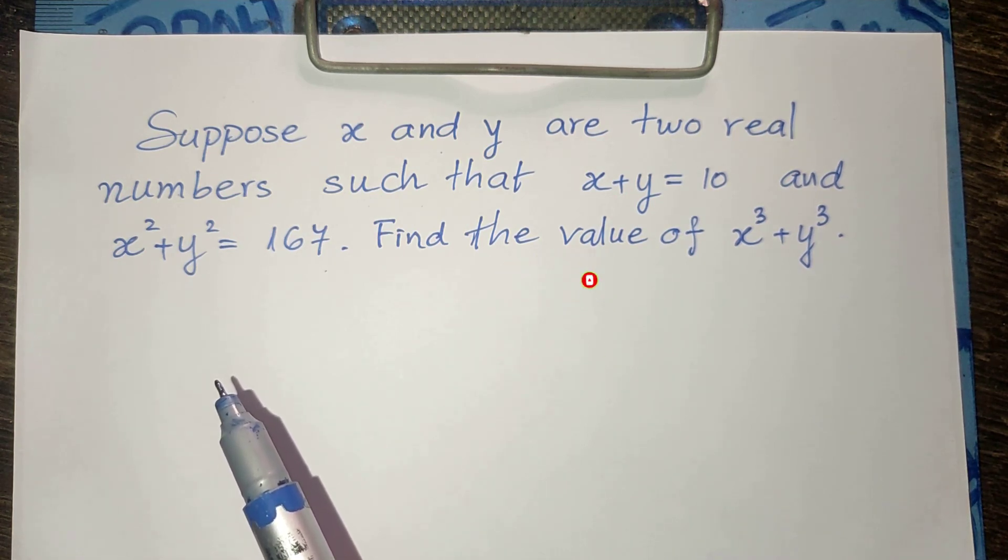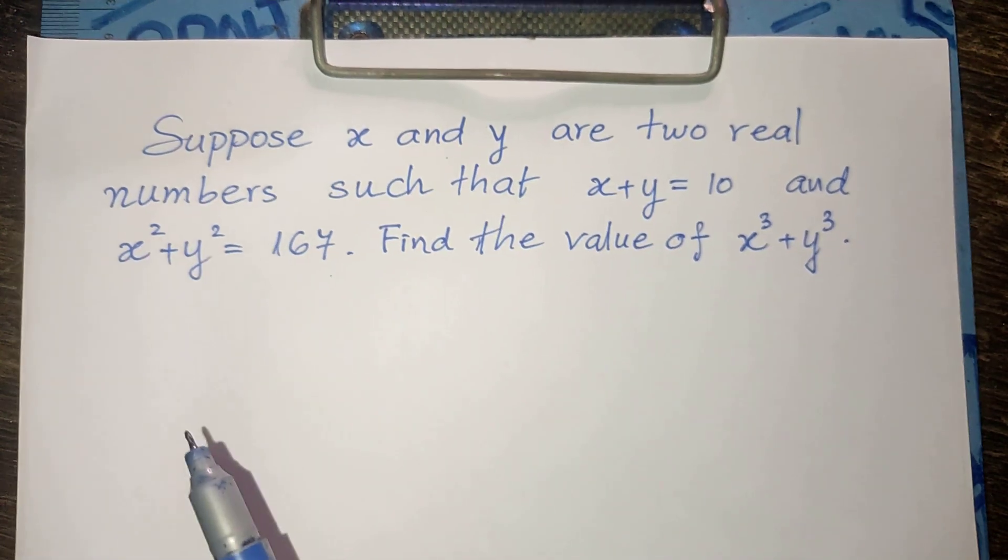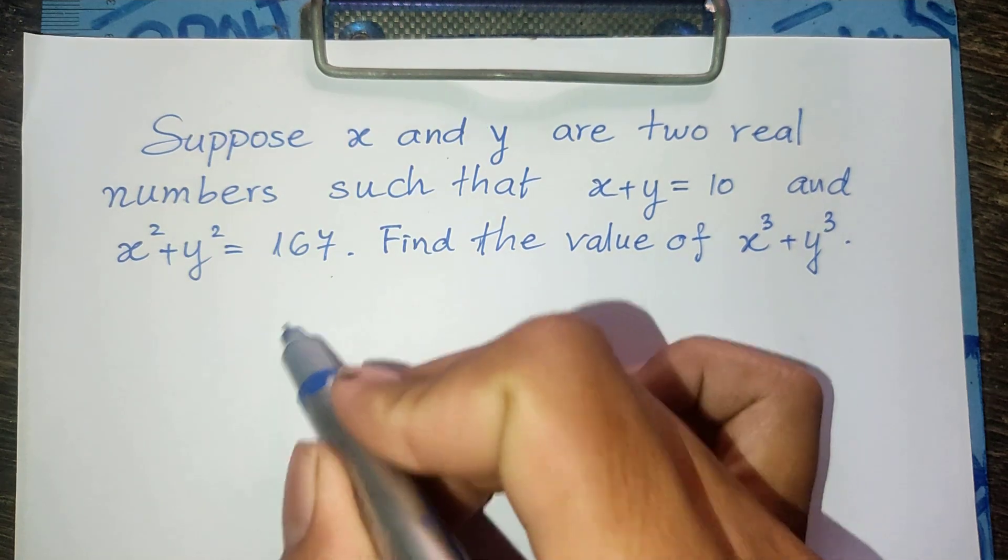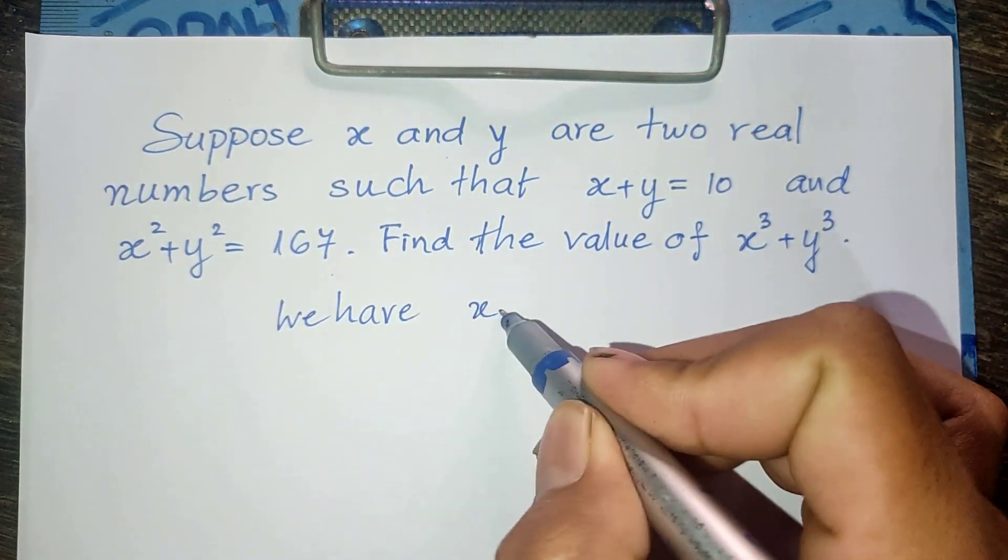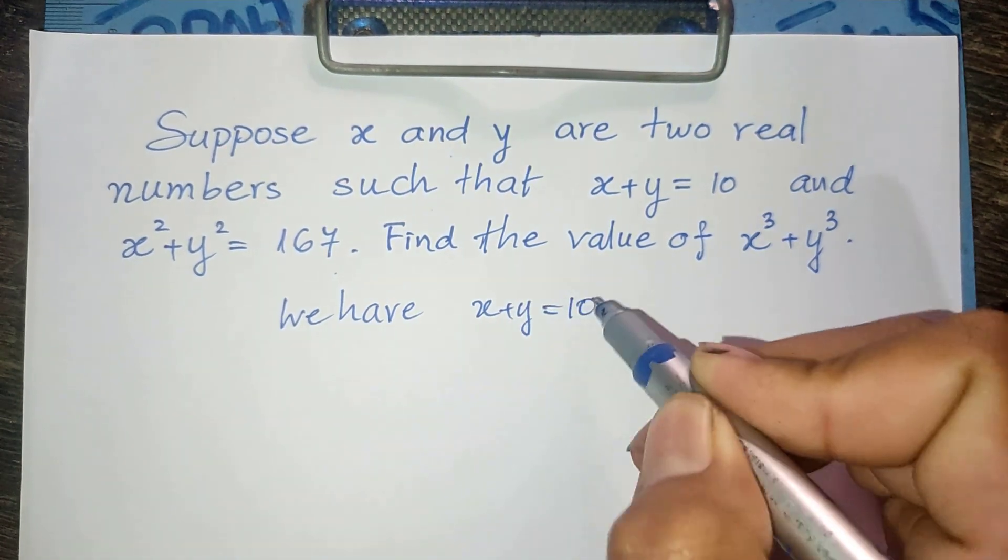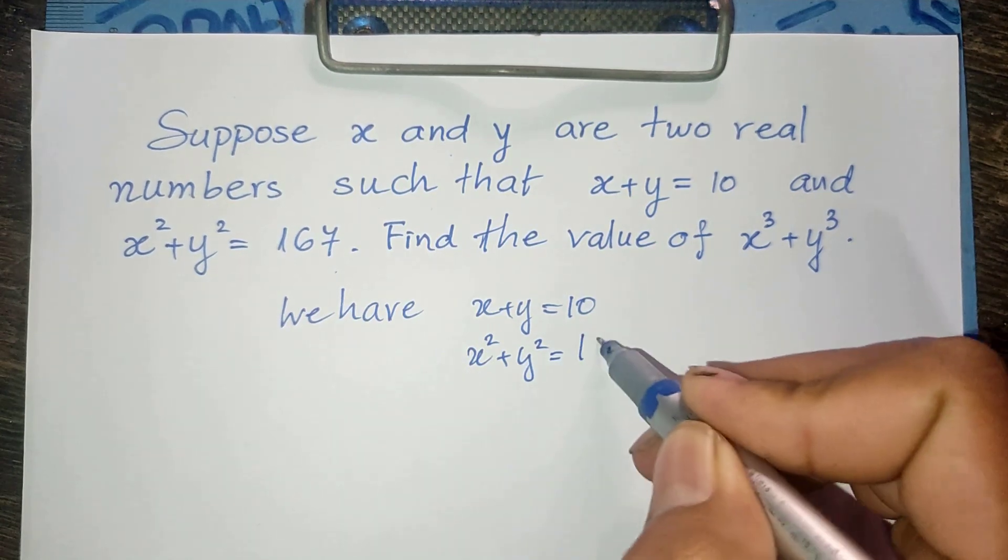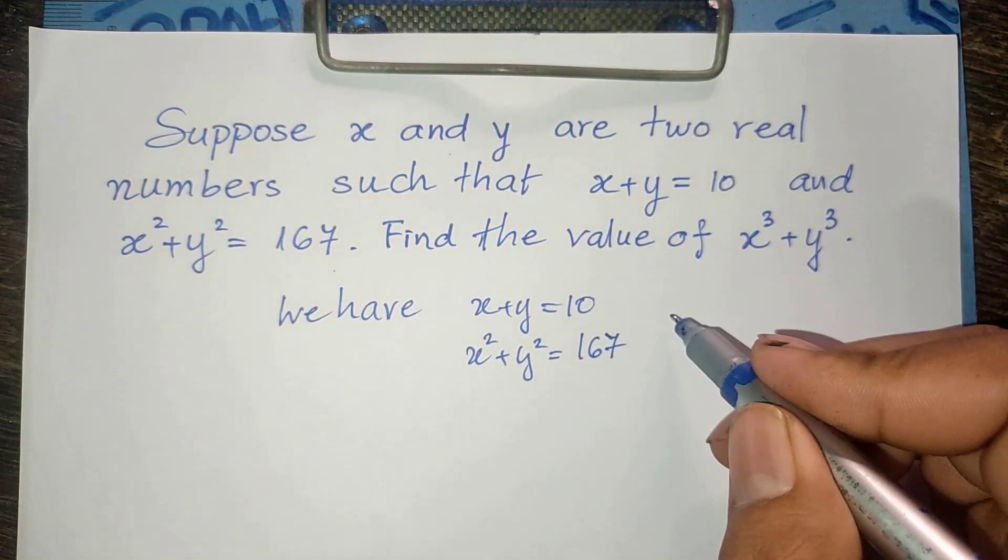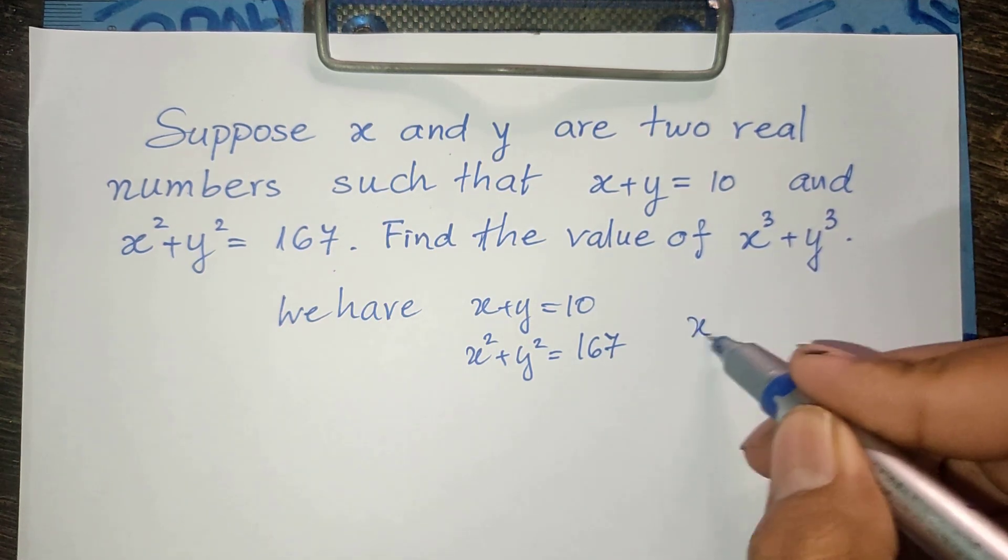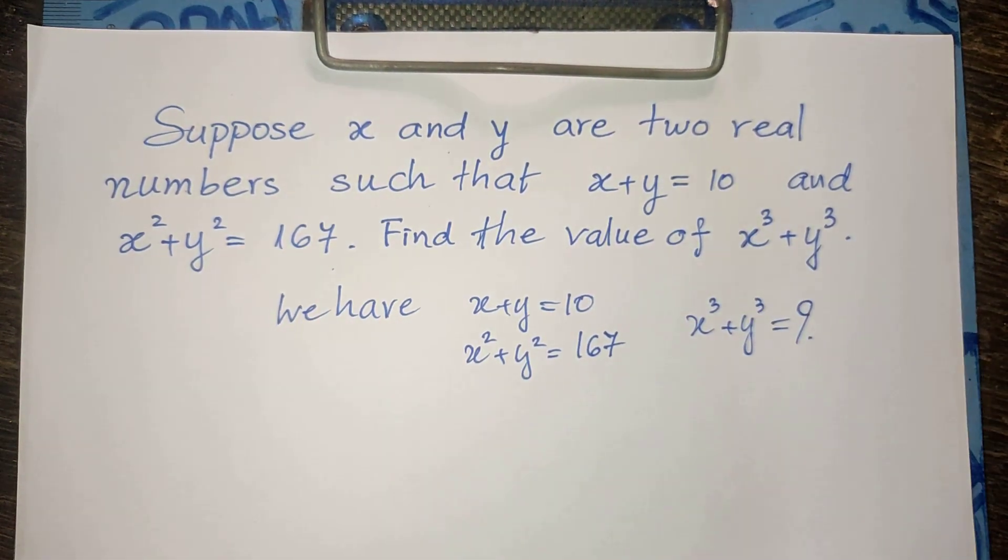Okay, now we go to the solution together. We have x plus y equals 10 and x squared plus y squared equals 167, and we find out x power 3 plus y power 3.